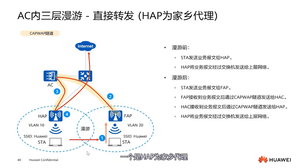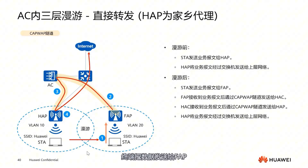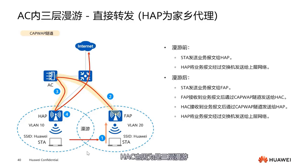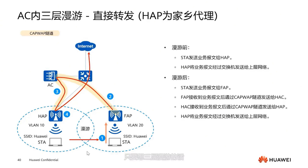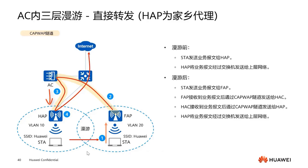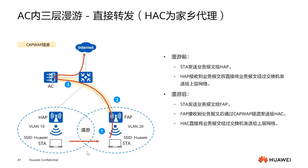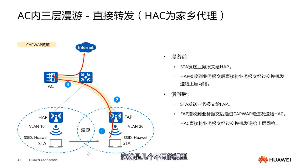For direct forwarding in Layer 3, there are two scenarios. First, HAP acting as the home agent: before roaming, HAP directly sends user data to the network. After roaming, the terminal sends data to FAP. Because it's Layer 3 roaming, it needs to return to HAC. Since HAP is the home agent — meaning all data must return to HAP — the data goes back to HAP, and HAP then sends it to the network. This is a more complex process. If the AC is the home agent, there's no need to return to HAP; data goes directly to the AC and is then sent directly to the upper network.